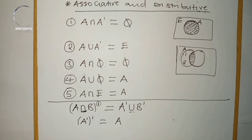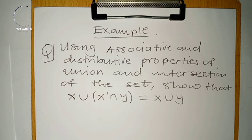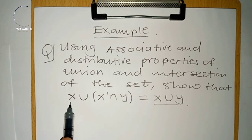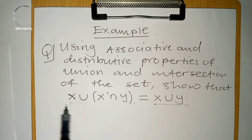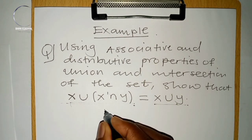Let's try an example. The question is: using associative and distributive properties of union and intersection, show that X ∪ (X' ∩ Y) = X ∪ Y. We will work from the left-hand side to the right-hand side.